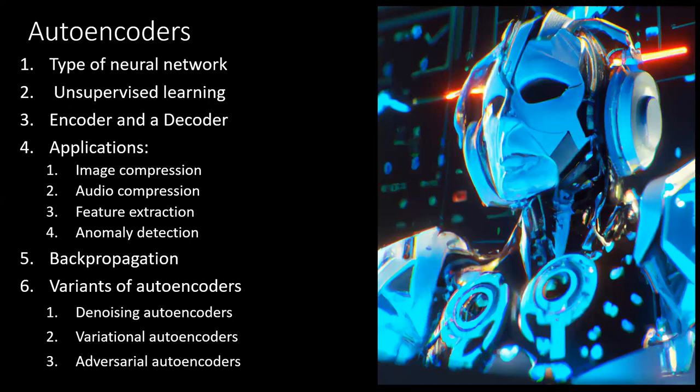One common type of autoencoder is the denoising autoencoder, which learns to remove noise from input data by training on corrupted versions of the original data. Autoencoders can also be used in conjunction with other neural network architectures such as CNNs — convolutional neural networks — to improve their performance on tasks such as image classification and segmentation.